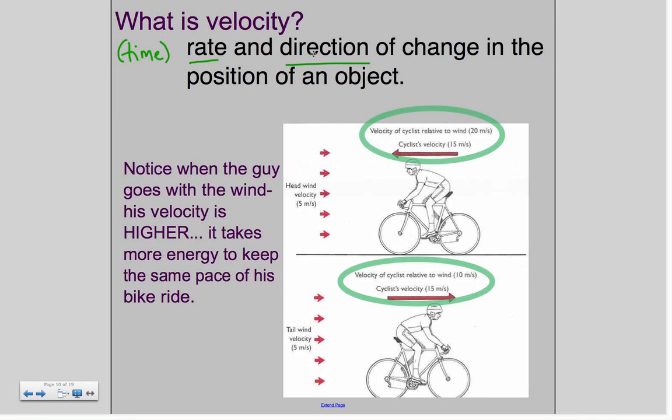Velocity is the rate and direction of change in the position of an object. Translation, it's the time and direction that something changes. So we've got two little cyclists here. The headwind or the wind going on to him is five meters per second, and this cyclist's velocity is 15 meters per second only because he's being slowed down by the wind. Notice that when he goes with the wind, his velocity may be the same, but his relative or his starting velocity has changed a little bit. He's gained in velocity.